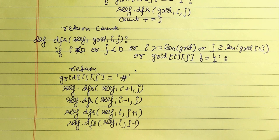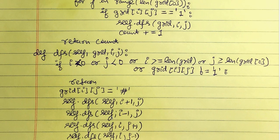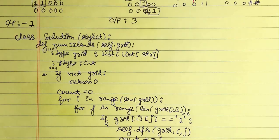If i and j are within the grid and grid[i][j] equals one, we flip grid[i][j] to the pound sign and recursively run depth-first search on the four neighbors: i+1, j (down); i-1, j (up); i, j+1 (right); and i, j-1 (left). We check all four neighbors, ensuring we count only correctly connected islands.